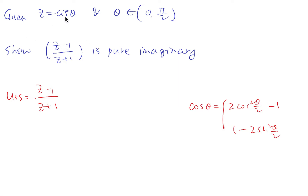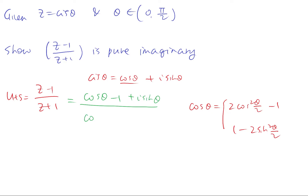So cis θ — we know cis equals cos plus i sine, so i is the imaginary part. Minus 1 plus 1 goes with cos θ, so we're just going to quickly write the left hand side: this will just equal to cos θ minus 1 plus i sine θ, and then cos θ plus 1 plus i sine θ.